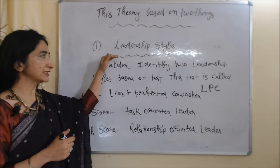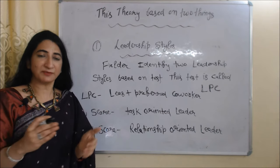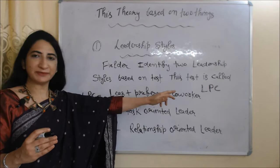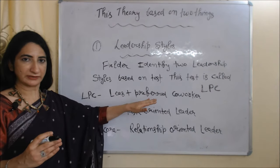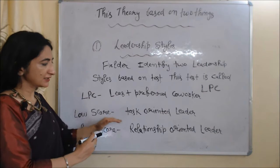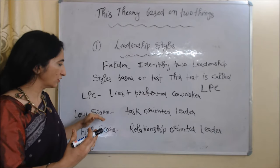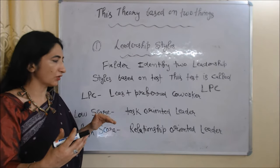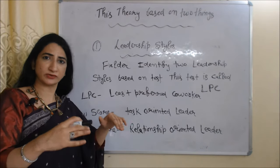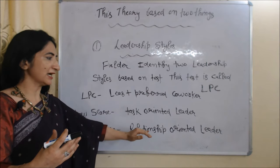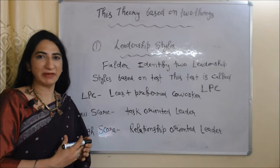First, we are going to talk about leadership styles. Fiddler identified two leadership styles based on a test called LPC — the full form of LPC is Least Preferred Co-workers. If you have a high score in this test, you are called a relationship-oriented leader. On the other hand, if you have a low score, you are called a task-oriented leader. Task-oriented leaders only focus on task and work, while relationship-oriented leaders focus on motivation and well-being of their team members.